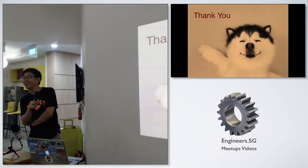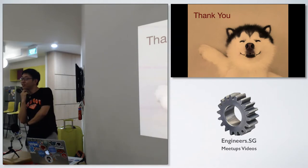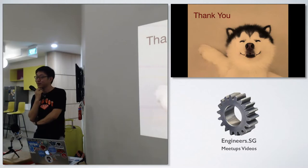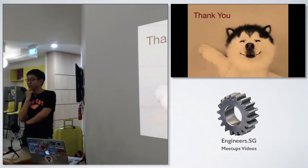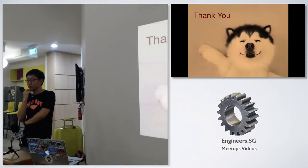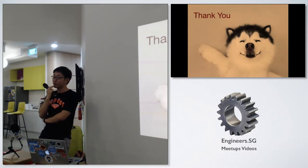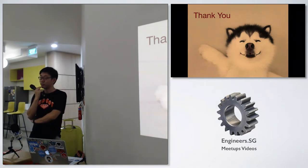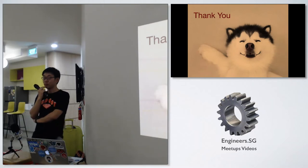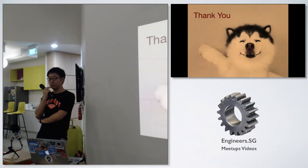GemFury lets you publish gems just like rubygems.org does, except they're private and you need authentication to access them. We've got five different gems and right now fourteen different builds of five different gems that various apps use, and we manage those on GemFury the exact same way we would on rubygems.org. Before I started trying to make that work using this method, I had about twice as much hair as I do now.